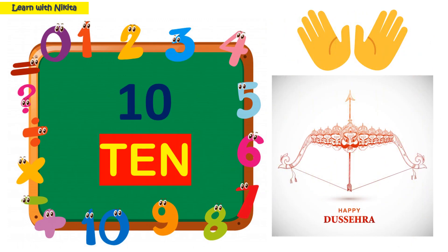This is number 10 — TEN. Let's see examples related to it: 5 fingers in one hand and 5 fingers in the other hand, making a total of 10 fingers, and 10 heads of Ravana.